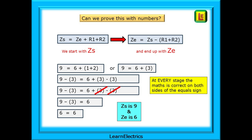Or we could say 9 equals 6 plus 3. Now subtract 3 from both sides: 9 minus 3 on the left equals 6 plus 3 minus 3 on the right. The 3s on the right will cancel out since plus 3 minus 3 is 0. This leaves 9 minus 3 on the left equal to 6 on the right — or 6 equals 6. Notice that at every stage the maths is correct on both sides of the equal sign. We've now confirmed ZS is 9 and ZE is 6.